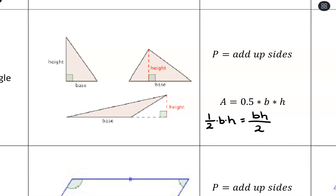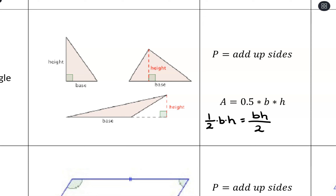The height is a perpendicular, so it makes a right angle with the base of the triangle. In a right triangle, we have the height and base directly. With a non-right triangle, we have to recognize the base and then drop down a perpendicular to visualize the height. There's also a special case where the height would be outside of the triangle.